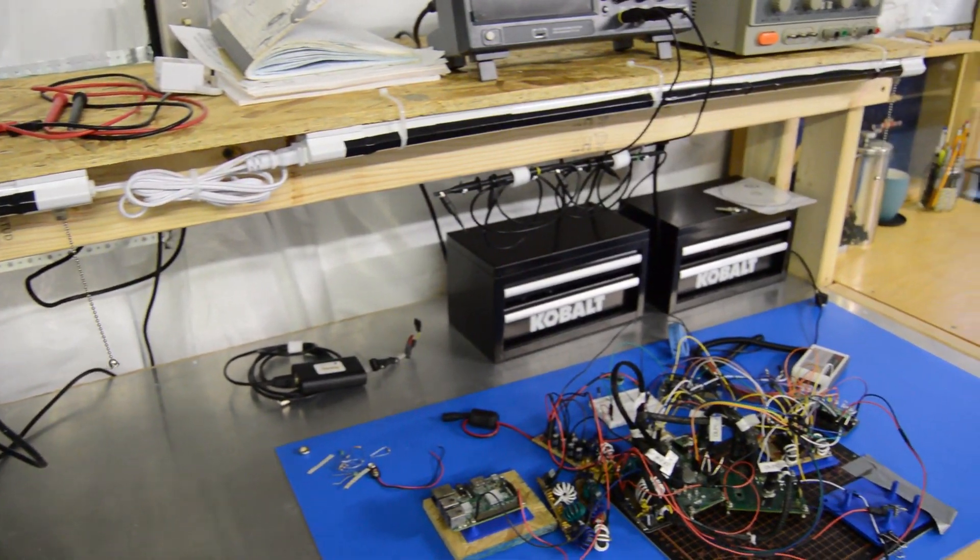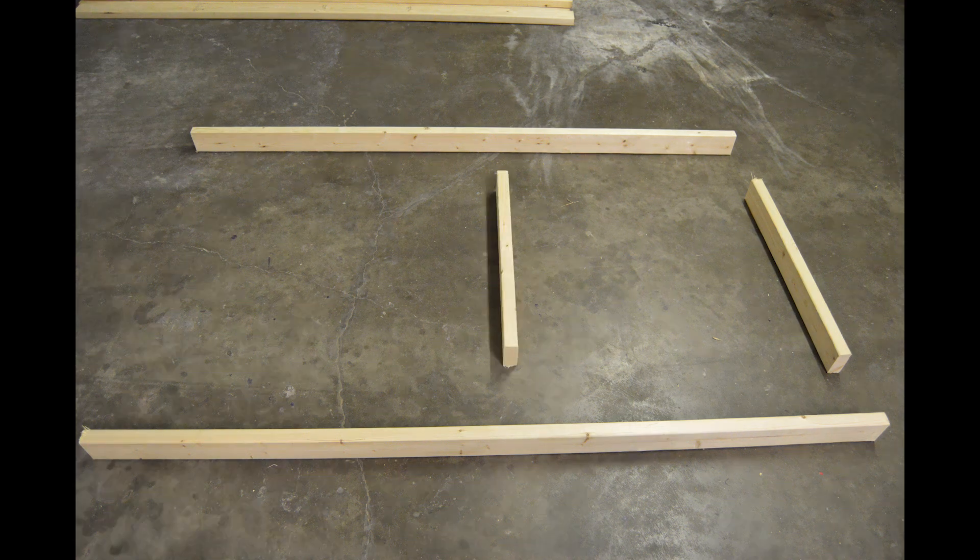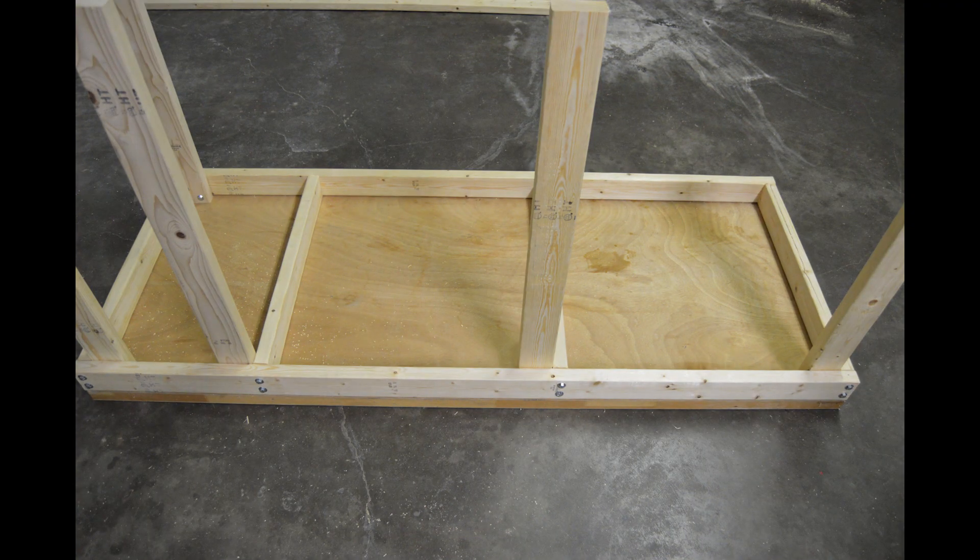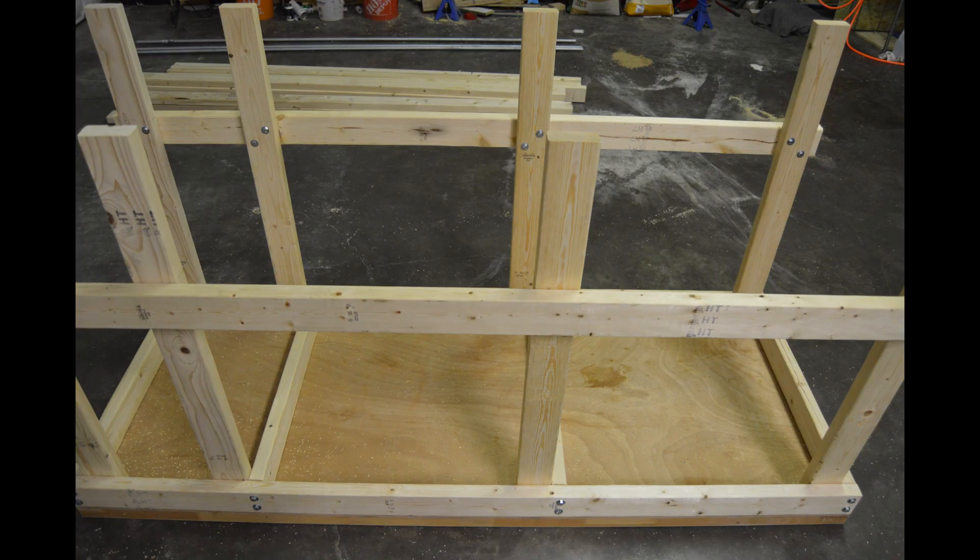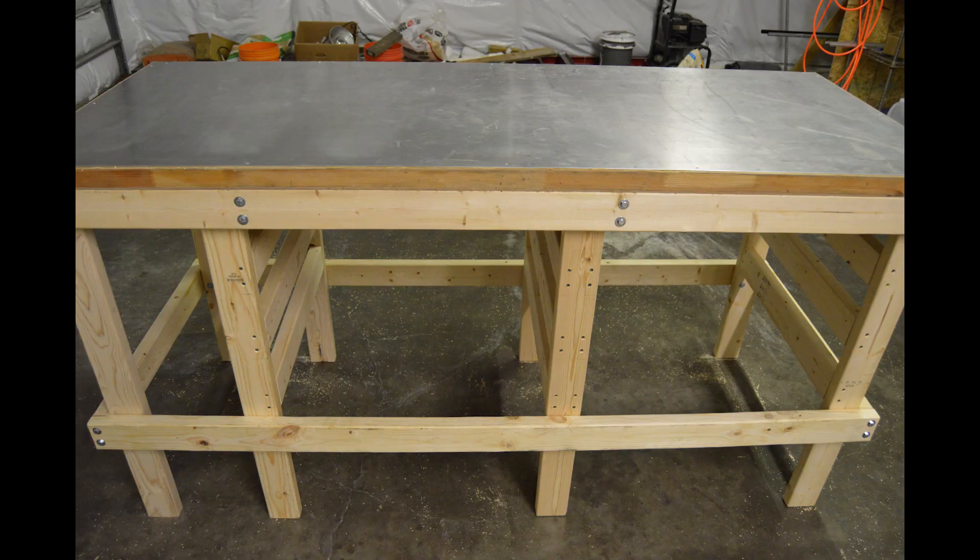First thing we're going to need is a detailed plan. And then we'll start processing our lumber. Screw some 2x4s together with lag screws, add legs, add a skirt, add support bars for the drawers.